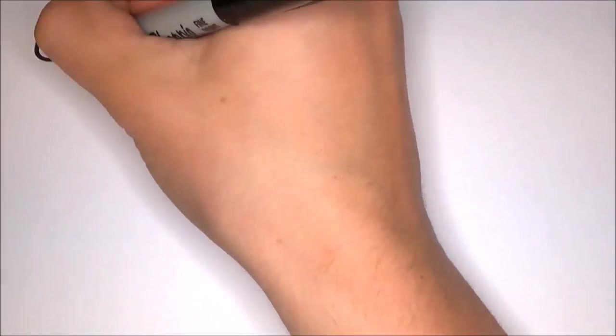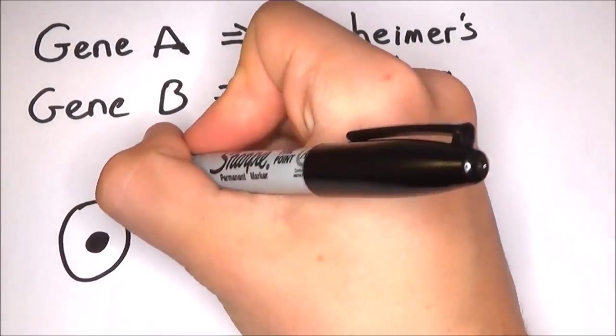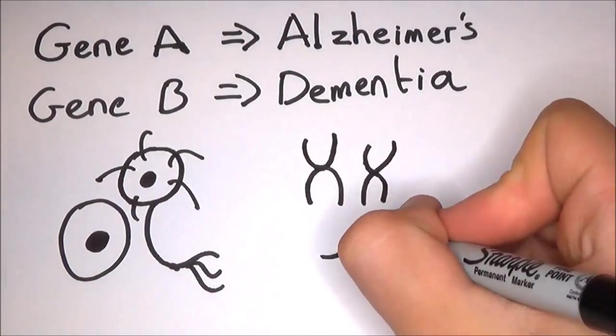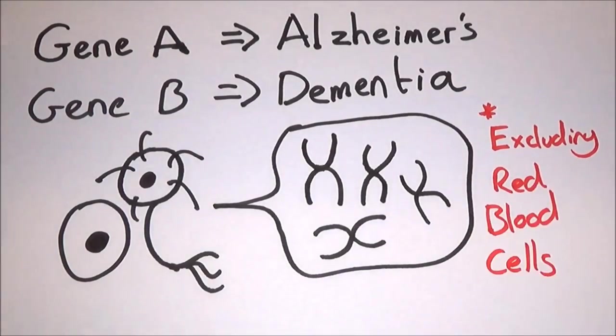Even if it was possible to find a gene responsible for every disease, it's still not that simple. Although all the cells in our body, other than our red blood cells, contain a full copy of our DNA, not all of it is used in each cell.